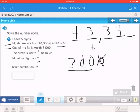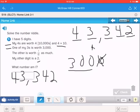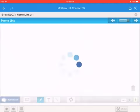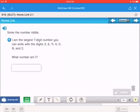And then it said my other digit is a 2. So we get 43,342. Like that. Again, 43,342.